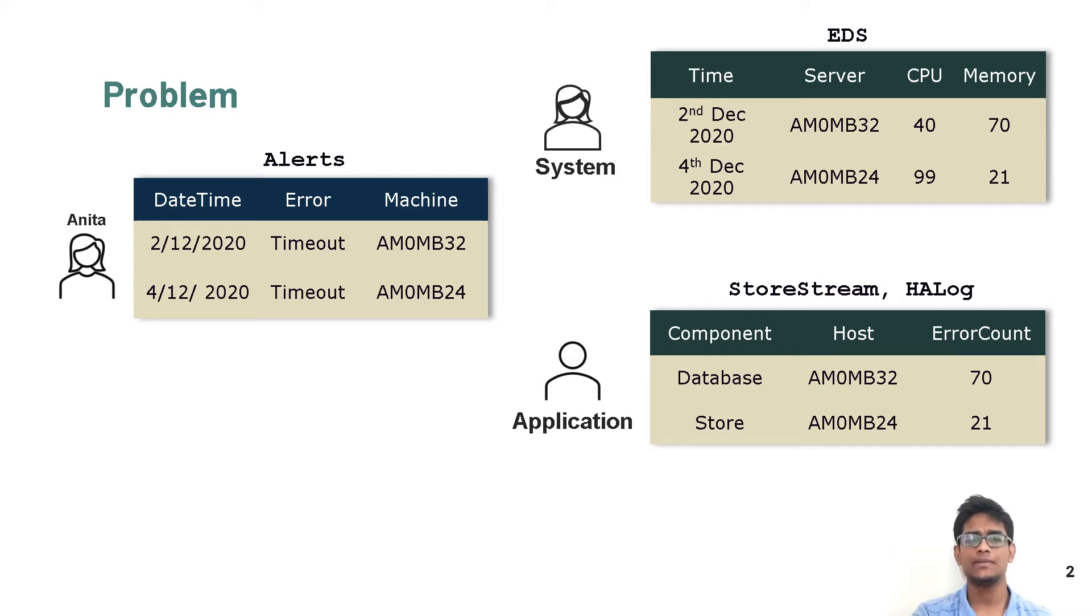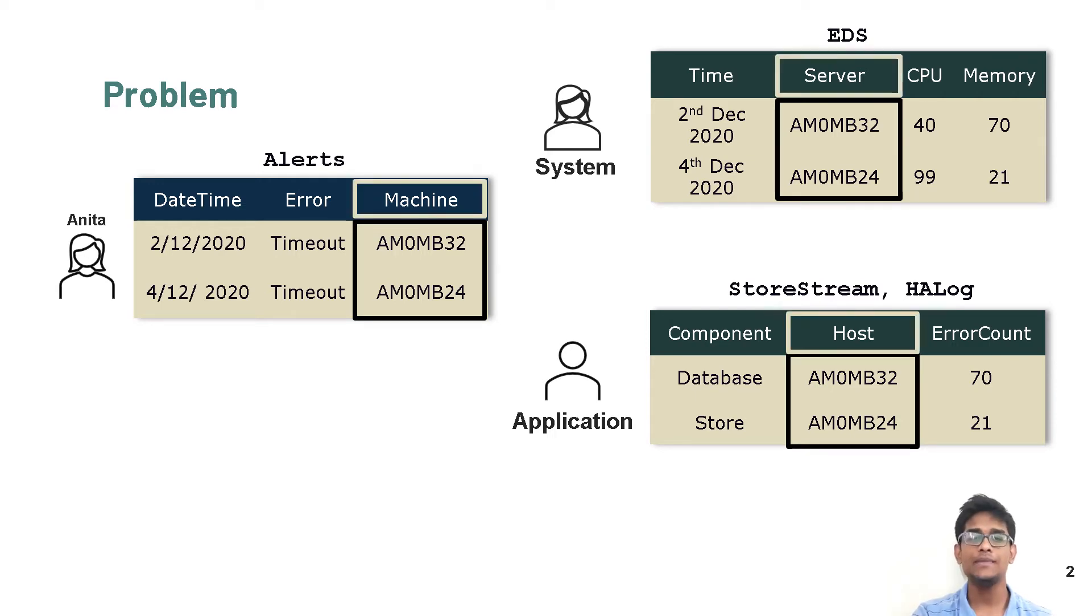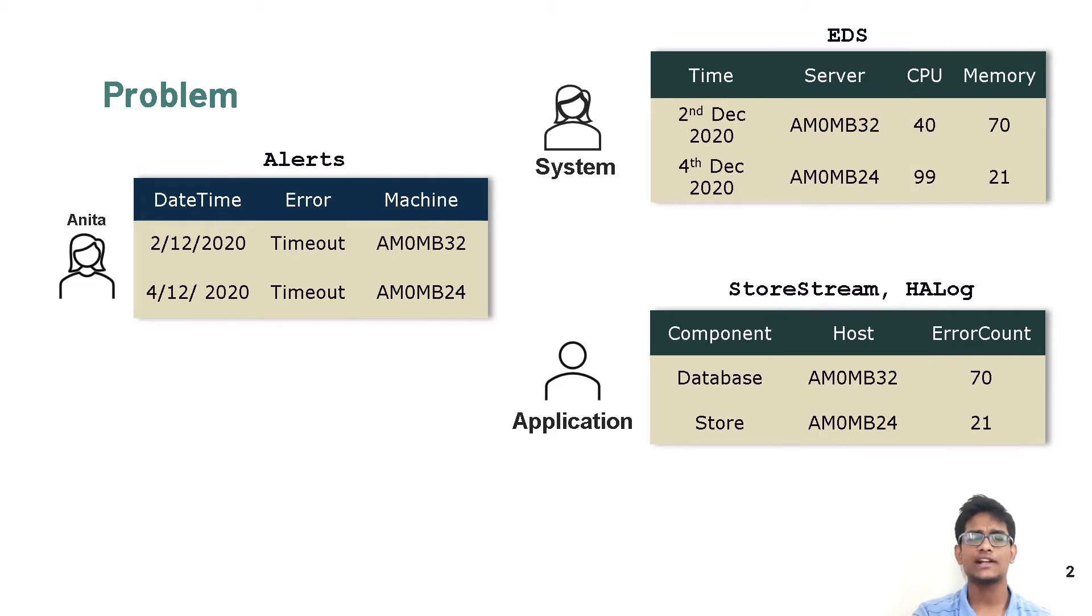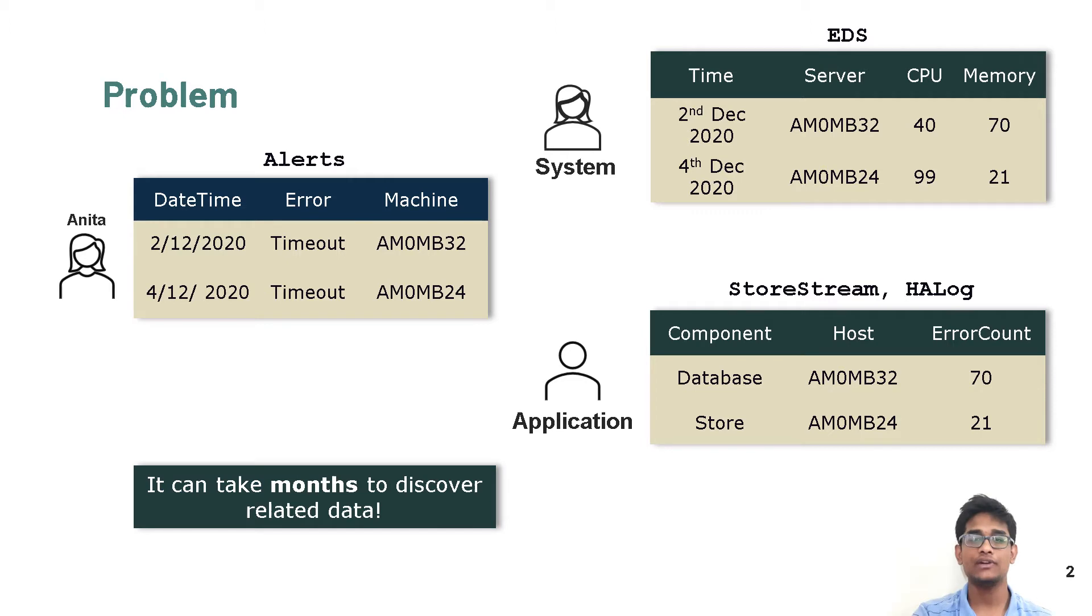She needs to join all these tables on columns that represent machine names, but these column names are not the same across different data sets. These are called machine name in one table, while being called server or host in the others. Moreover, in a large organization, these data sets are often owned by several independent teams, each having its own data access and usage practices. All this makes it really difficult for Anita to easily find data that she needs for her analysis. This process of manually looking for teams and data sets can take several months.